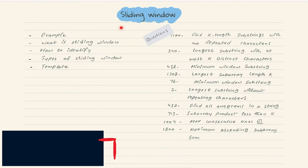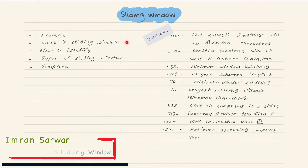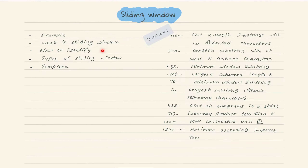Today we'll talk about another coding pattern: sliding window. Our flow will be: first some examples, then what is sliding window and how to identify it, then types of sliding window, and at the end a template using Scala with functional programming to solve these questions. These questions are mostly from LeetCode — their IDs are mentioned so you can find and practice them.